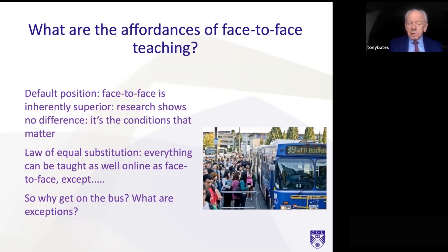I throw out this challenge in the book: why do students need to get on the bus to come to campus? This is from the University of British Columbia in Canada — this is the bus terminal at the university. When students can do more and more learning online, we have to have a better justification for them coming to campus. We need to think as much about the affordances of the campus as we do about the disadvantages of online learning.